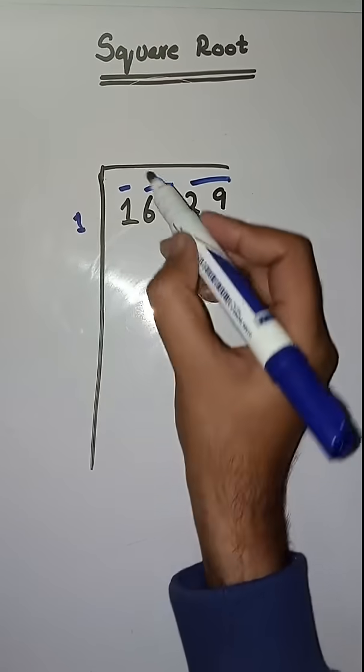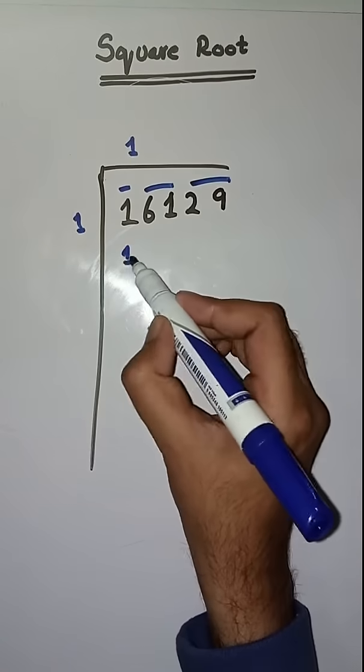First we have to solve 1. So we take a number 1. When 1 times 1, minus 1, 0.